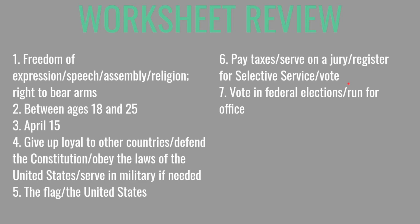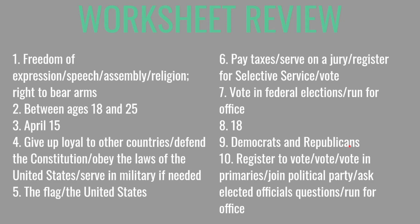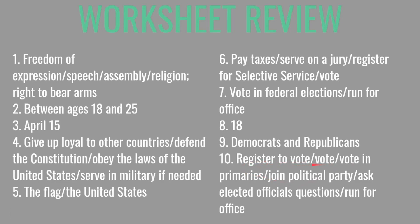Question seven: one right only for United States citizens — voting in federal elections or running for office; you need one. Question eight: citizens must be age 18 to vote for president. Question nine: the two major political parties are the Democrats and the Republicans. Question ten: two ways Americans can participate in their democracy — there were many options on the slide, but the two easiest to remember are registering to vote and voting. Make sure your answers match what's on the screen and study them, because these are the questions you may be asked at your citizenship interview.